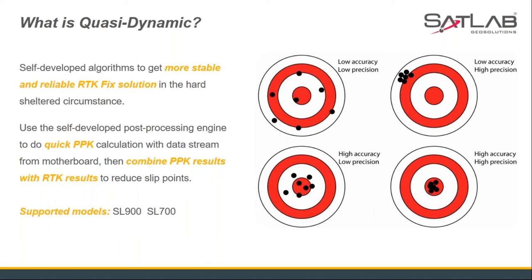It combines actual short PPK results with RTK results to do short post-processing to reduce slip points. It has no effect on precision, but it will improve overall accuracy. If accuracy is very poor, it means the point deviates far from the correct value — this is called a slip point. QuestDynamic Survey removes these slip points. The receiver models supporting this function are SL900 and SL700.